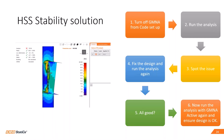To reiterate: when you have an analysis not reaching 100%, you have an HSS member and a large deformation. The approach to fix this is to turn off GMNA from code setup, run the analysis, spot the issue, fix the design, and run the analysis again. Verify everything is okay, then rerun the analysis with GMNA active and ensure the design is okay under GMNA — it is important that we capture the real behavior of HSS members.